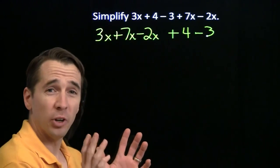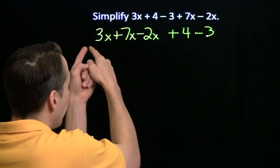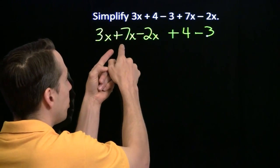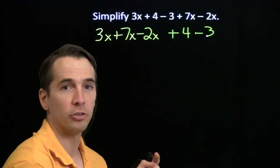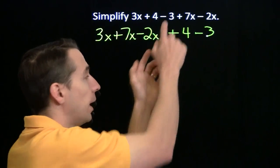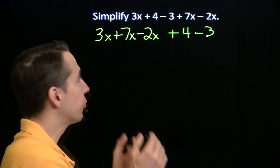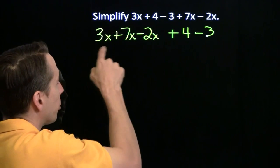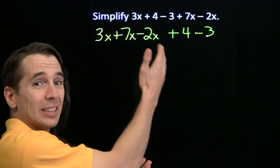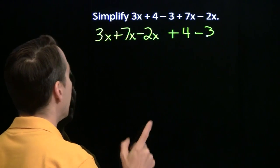Now, notice we're very careful to keep track of our signs. Plus 3x plus 7x minus 2x plus 4 minus 3. Keep your signs straight. Now that we've grouped all these x terms together, we can add them all up. 3x plus 7x is 10x. 10x minus 2x is 8x.